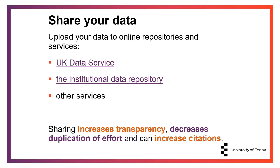Sharing your research data is another great way to improve your citations. You can share your data by uploading it to online repositories and services. The university also has an institutional data repository, and the UK Data Service is another good example — a national data service that provides research access to a range of social and economic data collections, including UK census data and government-funded surveys. Sharing your data through those platforms increases the transparency of your work, decreases duplication of effort, and increases citations.